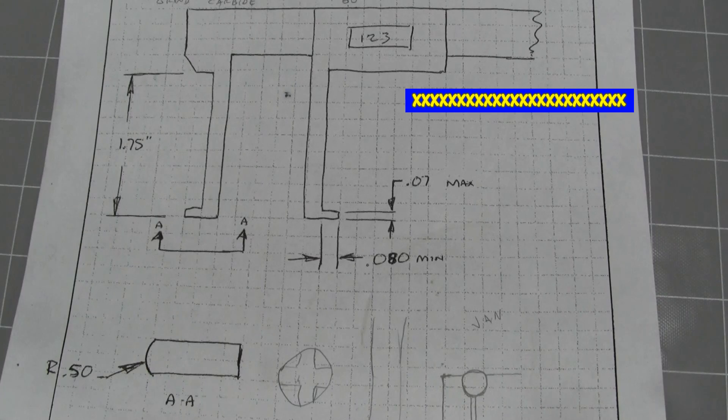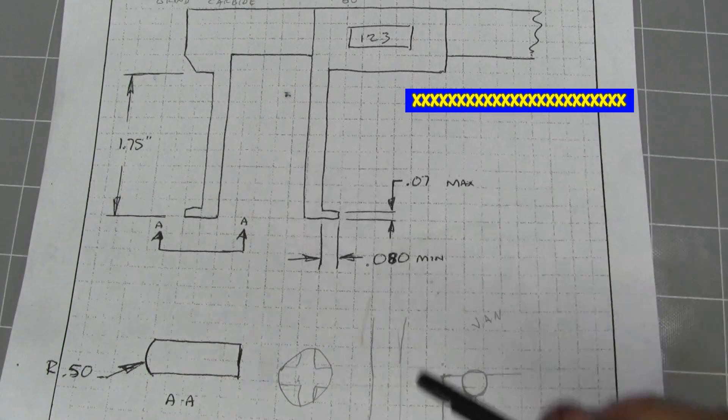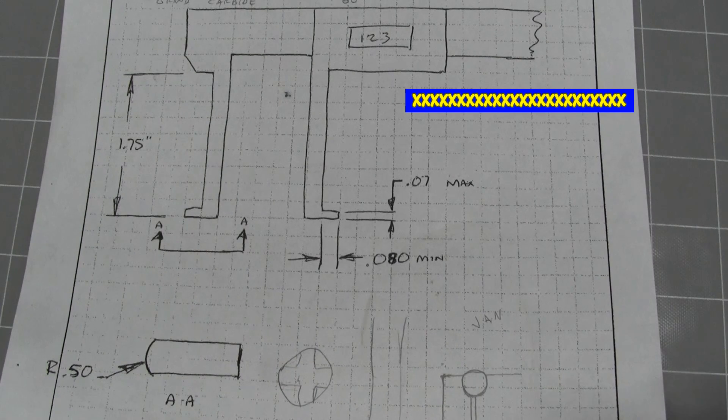And that spherical end will be a radius that's smaller than the smallest diameter that they're after. They need at least an 80,000ths depth and they want to get into a one inch diameter bore minimum.